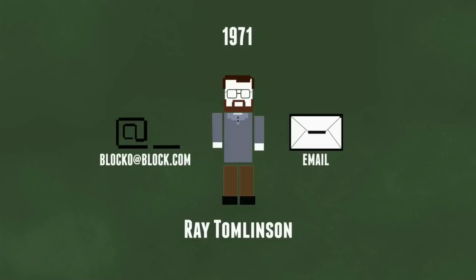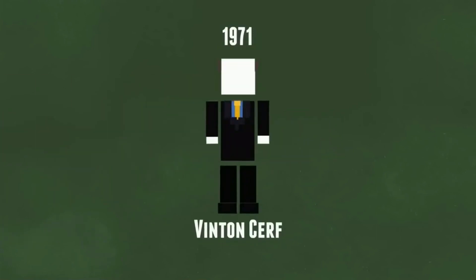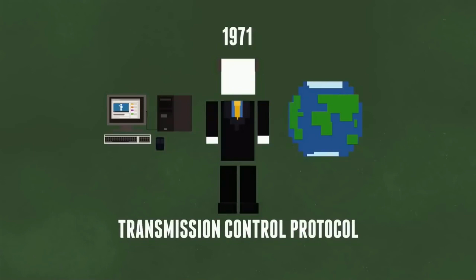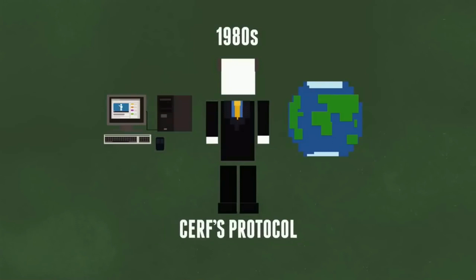With all of the networks floating around, there needed to be a way for all of the computers on them to communicate with other networks. This is where computer scientist Vinton Cerf comes in. He invented a way to introduce computers across the globe to each other in a virtual space. This invention was called Transmission Control Protocol, or TCP, which was followed by Internet Protocol, or IP. In the 80s, scientists used Cerf's protocol to send data back and forth.